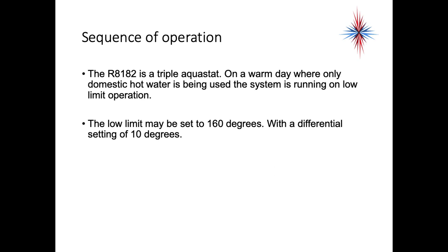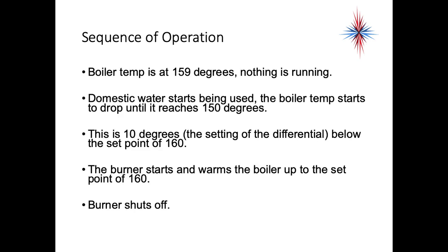The 8182 is a triple aquastat. On a warm day where only domestic hot water is being used, the system runs on low limit operation. The low limit may be set to 160 degrees with a differential of 10. If the boiler is at 159 degrees and someone starts using hot water — taking a shower, doing laundry, doing dishes — the boiler temperature drops until it reaches 150 degrees, which is 10 degrees below the setpoint of 160. The burner starts and warms the boiler up to 160, then shuts off. That 10 degrees is the differential.